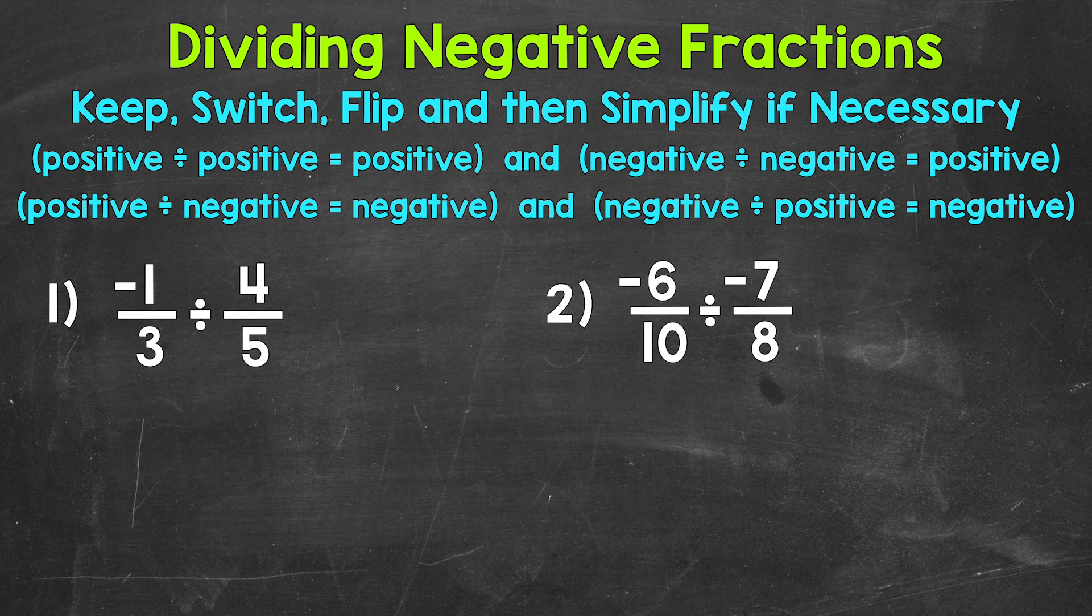Let's jump into our examples here, starting with number one, where we have negative one third divided by four fifths. So keep, switch, flip. Always keep the first fraction. So let's rewrite our problem: negative one third.